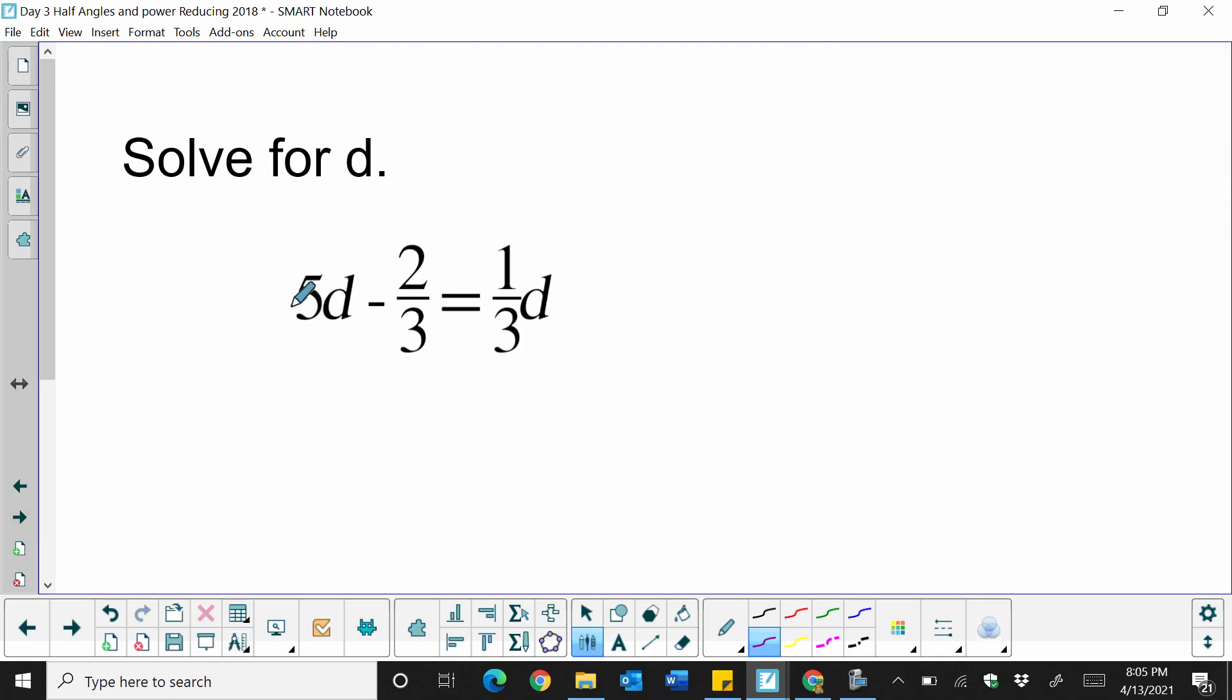So let's look at a second example. Our denominators are both 3. So that means we're going to multiply the equation through by the value 3. So now let's distribute to each of the three terms. So 3 times 5d, that's going to give me 15d, minus 3 times 2/3. Well, the threes will cancel out, so I'm just left with minus 2. 3 times 1/3, again, the threes are going to cancel out, and I'm just left with 1d, or just d.